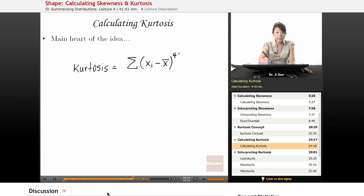So kurtosis already, we know, it'll probably be positive because it's going to raise everything to the fourth power. And when you raise something to an even-numbered power, it's going to be positive. And then we're going to divide that by s to the fourth power, standard deviation to the fourth power.